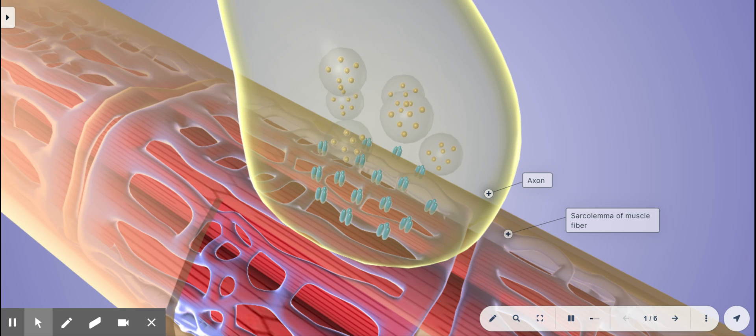A motor neuron is what triggers muscle contraction. As a nerve impulse reaches its axon terminals, it stimulates the release of the neurotransmitter acetylcholine from its vesicles.